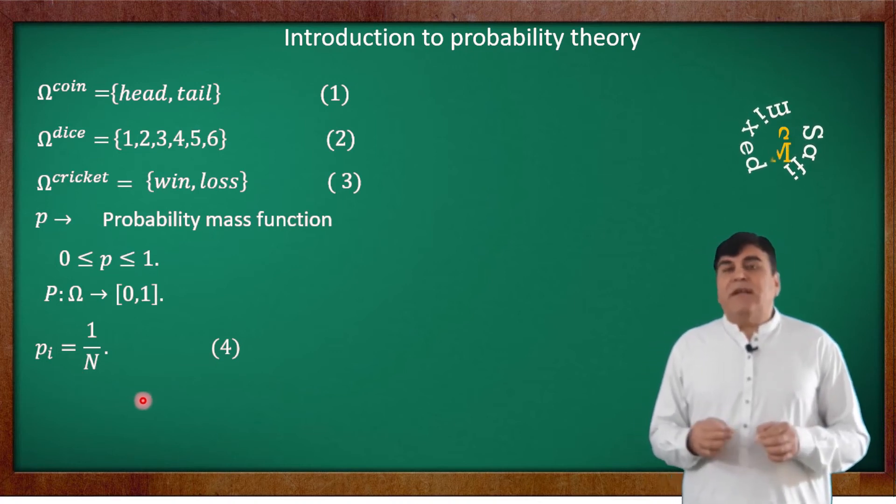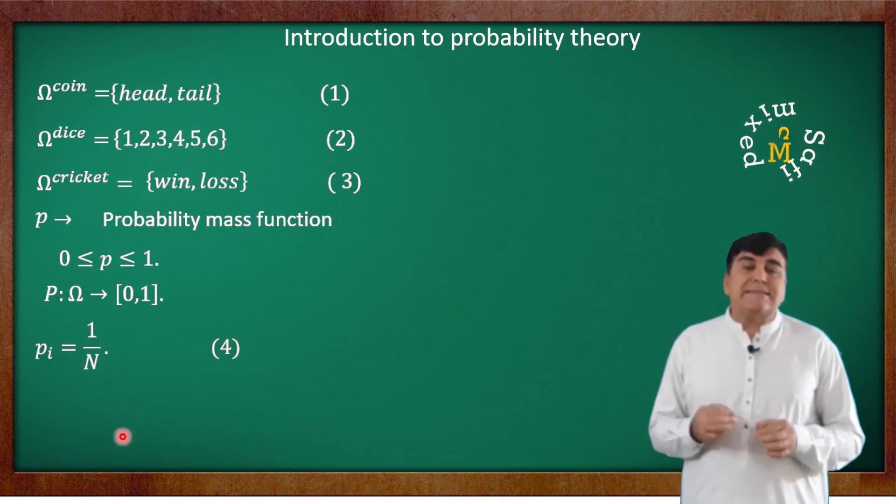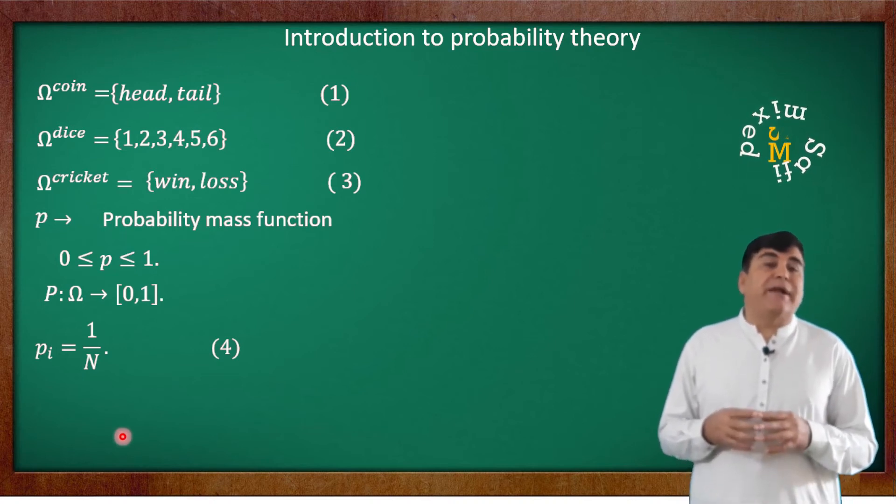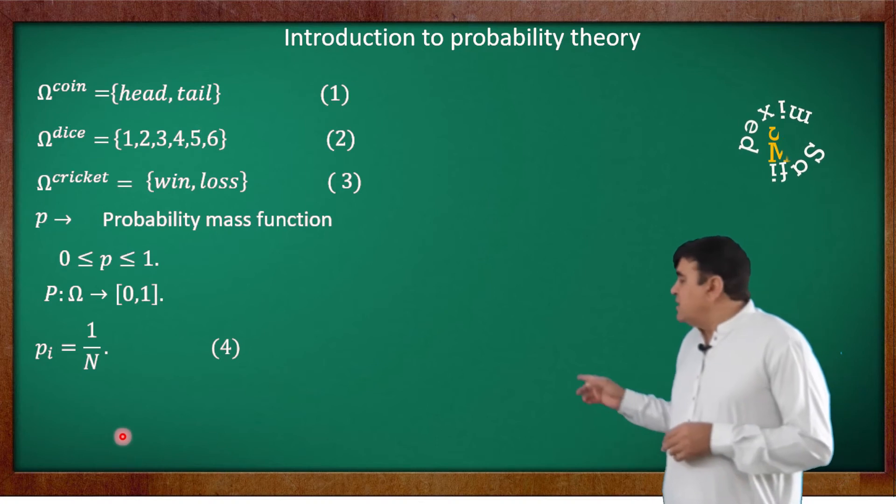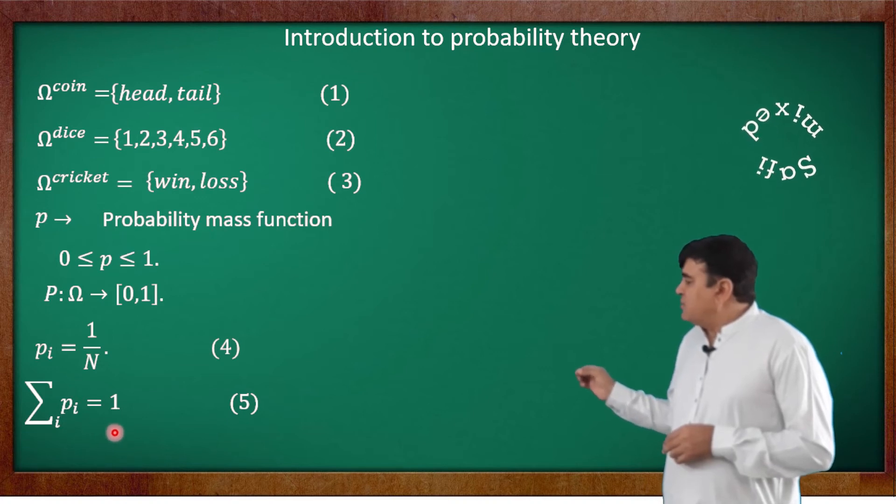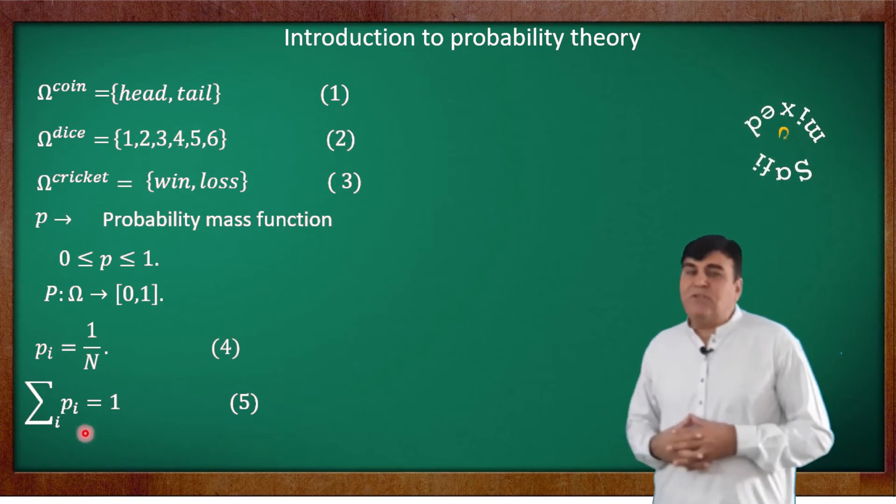The next concept related to the mass function is its normalization. The mass function is normalized and obeys the condition: sum over i of P_i equals 1.